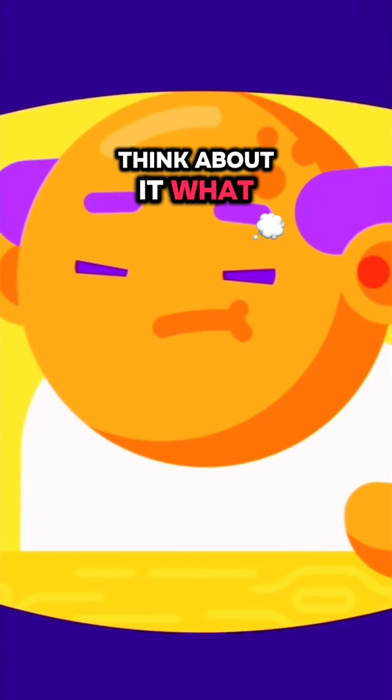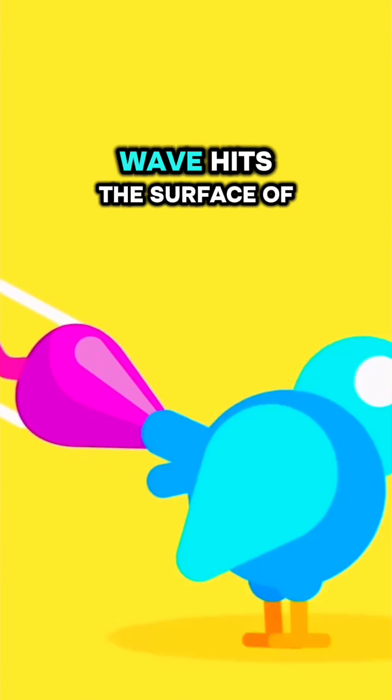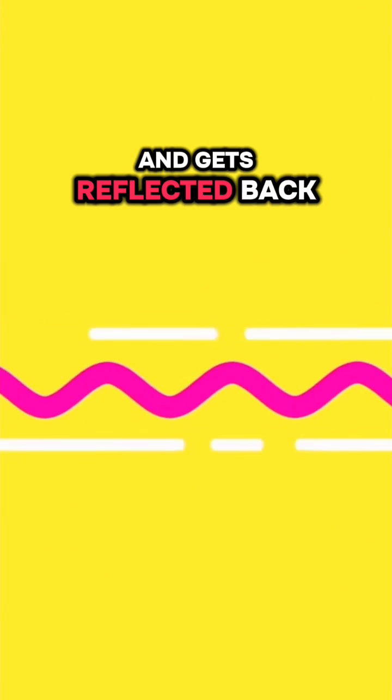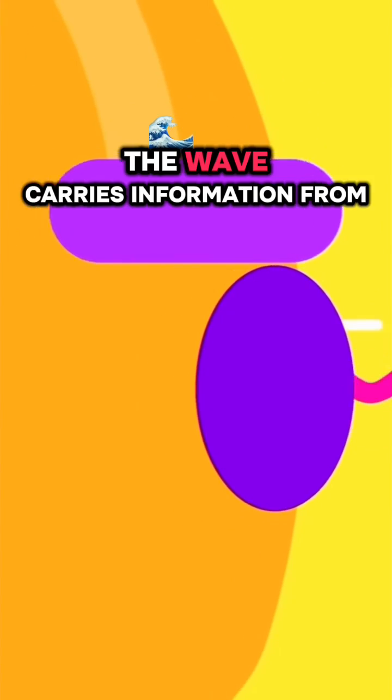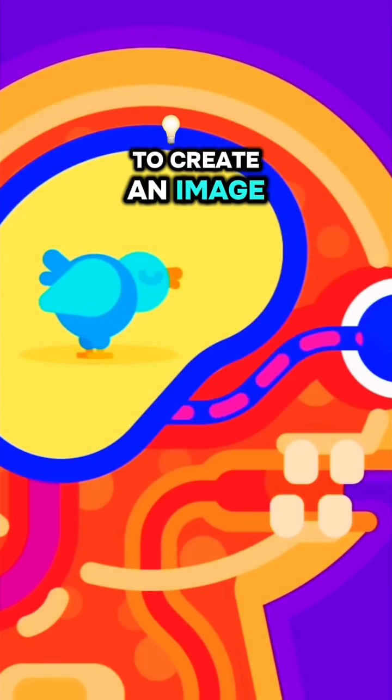Think about it. What is seeing? To see something, we need light, an electromagnetic wave. This wave hits the surface of the thing and gets reflected back from it into your eye. The wave carries information from the object that your brain uses to create an image.